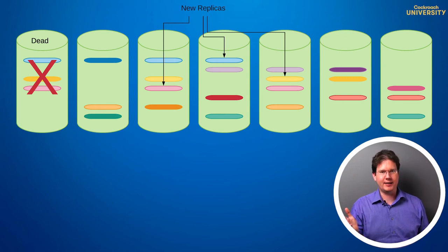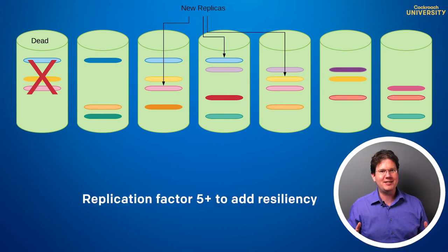Unless we had a higher replication factor. If we set that to at least five, we'll still be guaranteed a majority for every range, even if we lost two nodes together. Let's rewind the clock, and this time set that replication factor to five.